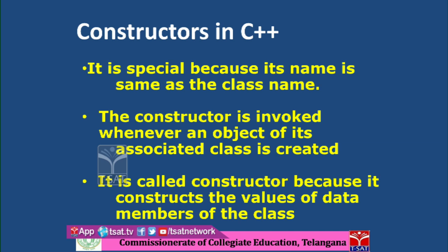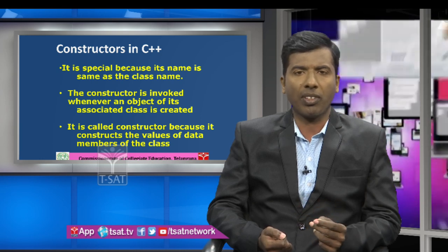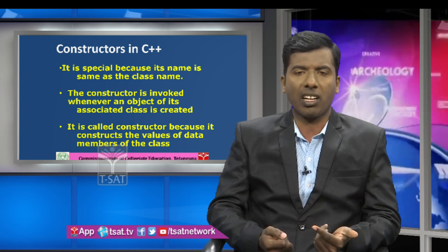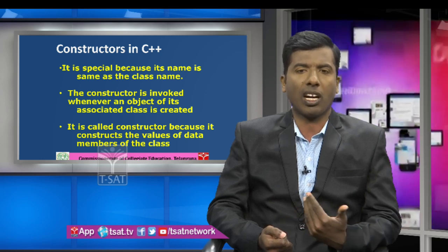Whenever a constructor is invoked, an object of its associated class is definitely created. It is called constructor because it constructs the values of data members of the class. So here we have observed two points: one, it is special because it takes the same name as that of a class name; and two, it is called a constructor because it constructs the values of data members of the class.